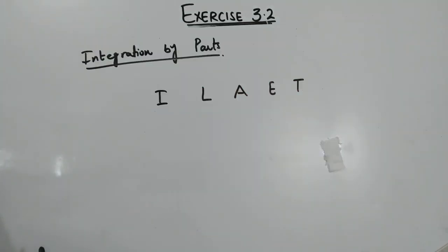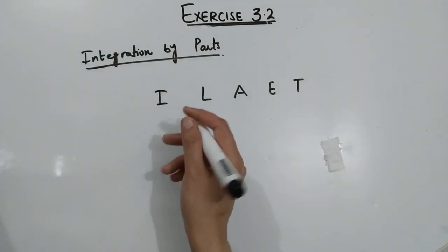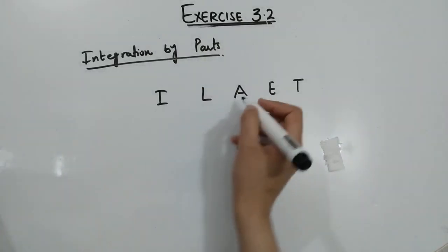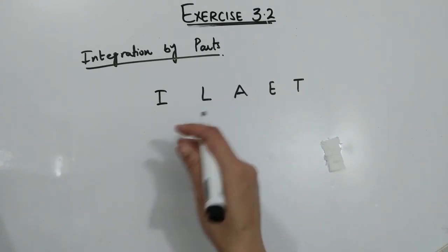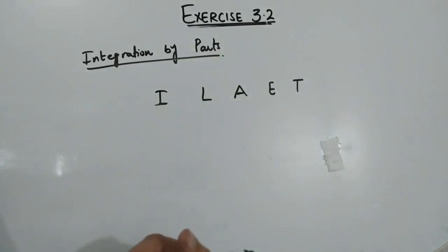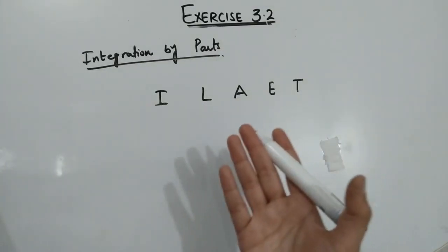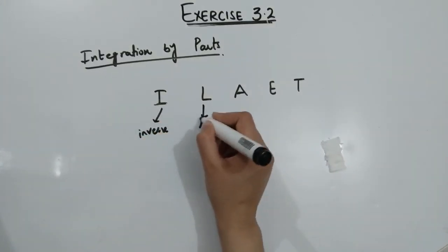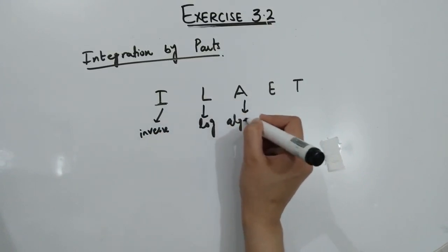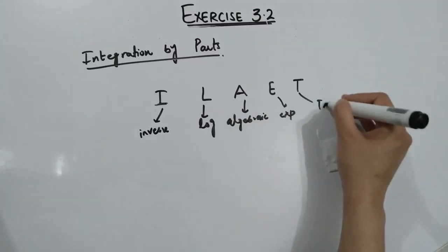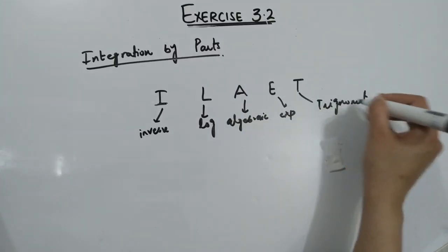Before starting Question 5, know that integration by parts will be used. Integration by parts is the product rule of integration. We need to identify the first and second functions. To decide the order, use the ILATE rule: I for Inverse functions, L for Logarithmic, A for Algebraic, E for Exponential, and T for Trigonometric functions.